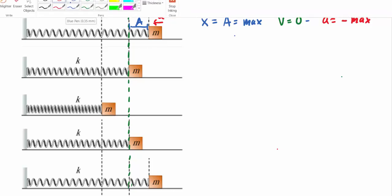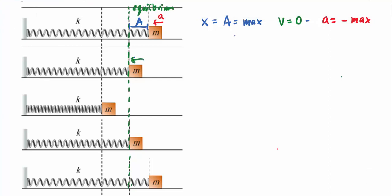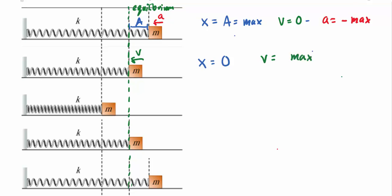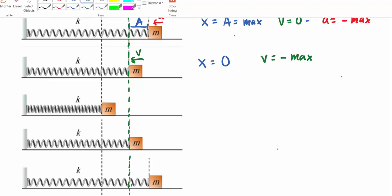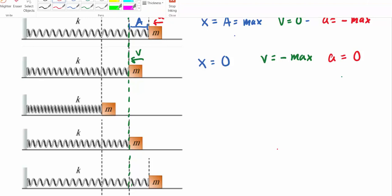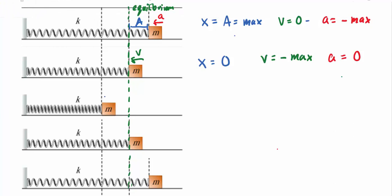The mass accelerates to the left, picks up speed, and reaches the equilibrium point. At this point it's moving with maximum speed. As soon as it passes equilibrium, the spring tries to push it back. So at equilibrium: position is zero, velocity is at a negative maximum (moving left), and acceleration has dropped to zero — no force acts on it in that instant. But because it has that velocity, it overshoots and reaches position negative 'a' — the same amplitude but in the negative direction.